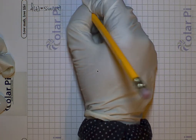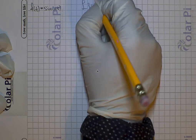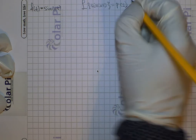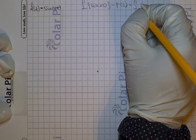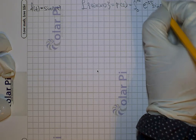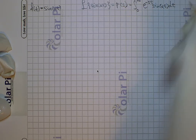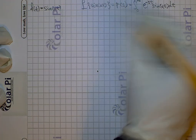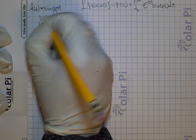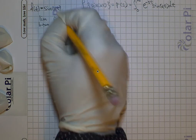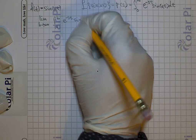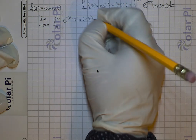From the definition we know that L of sine of at, which we can also write as capital F of s, is equal to the integral from 0 to infinity of e to the negative st times sine of at dt. Because we're dealing with an improper integral, we write limit as b goes to infinity of the integral from 0 to b of e to the negative st times sine of at dt.